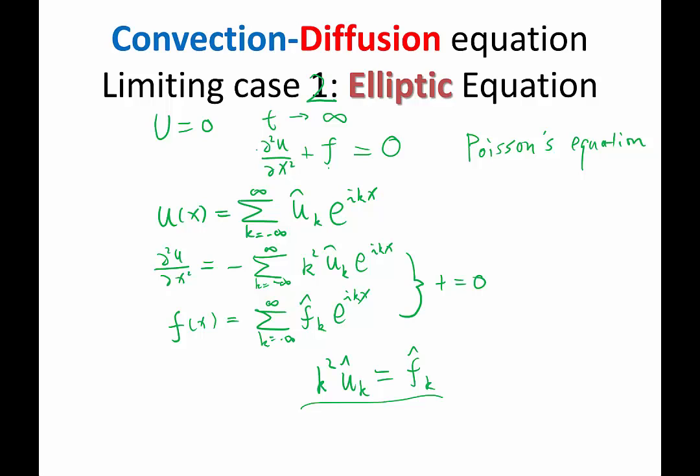For k equal to zero, we can see that f̂_k has to be zero, otherwise we don't have a solution. That's because the domain is periodic. And as we take t to infinity for the heat equation case, the f is like a heat source, like a source of thermal energy that pumps into the domain.